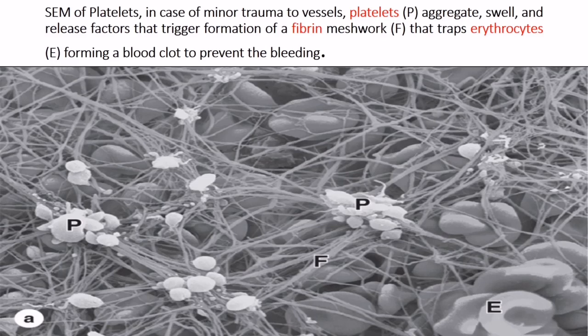Here is a scanning electron microscope image of platelets. In the case of minor trauma to vessels, platelets aggregate, swell, and release factors that trigger the formation of a fibrin network that traps erythrocytes, forming a blood clot to prevent bleeding. A scanning electron microscope image of the blood clot shows the platelet, the fibrin, and the erythrocytes.